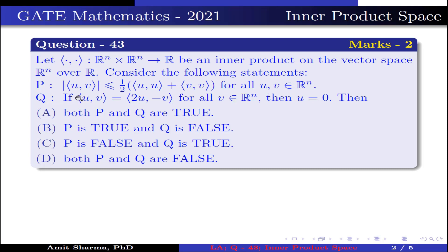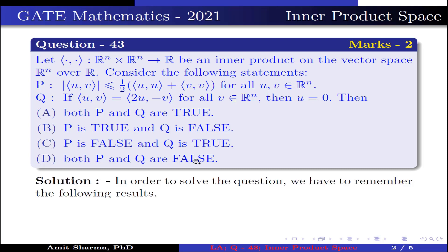Statement Q: if inner product ⟨u, v⟩ is equal to inner product ⟨2u, v⟩ for all v belonging to Rn, then u equals 0. Option A: both P and Q are true. Option B: P is true, Q is false. Option C: P is false and Q is true. Option D: both P and Q are false.